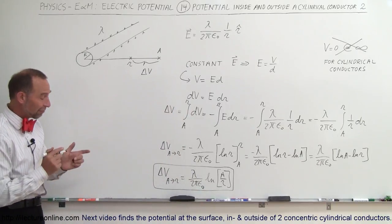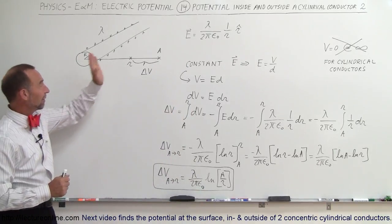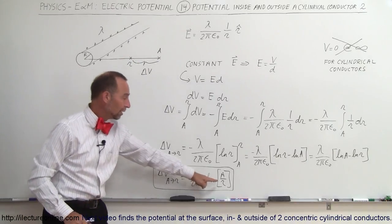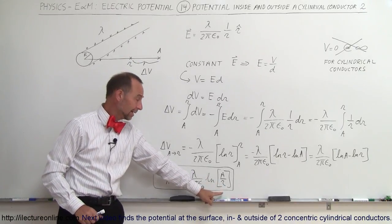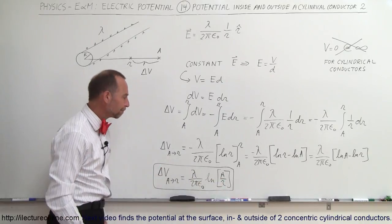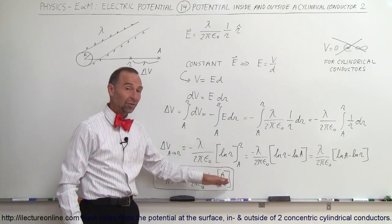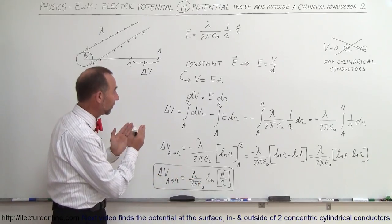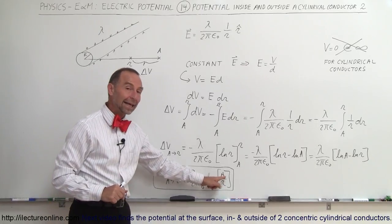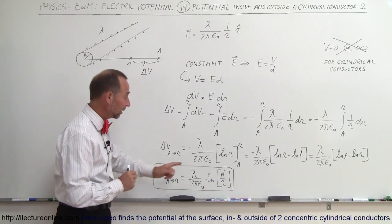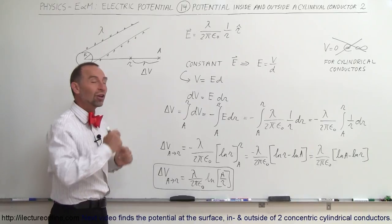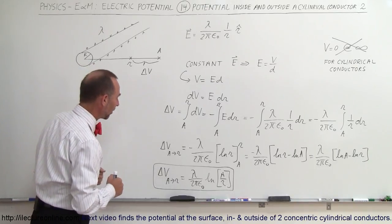That's how we find the potential difference from some reference point to some point either closer or farther away. Notice: if R is bigger than A, then A/R is a number less than 1, and the natural log of a number less than 1 is negative, so we get a drop in the potential. If R is smaller than A, then A/R is bigger than 1, the natural log is positive, so we get a positive change in the potential. That works out just fine.